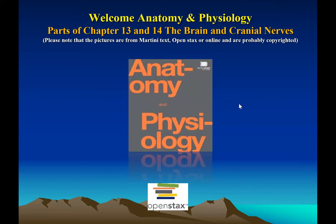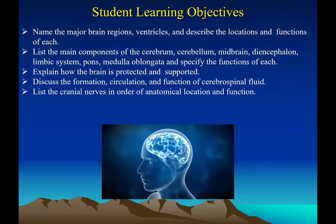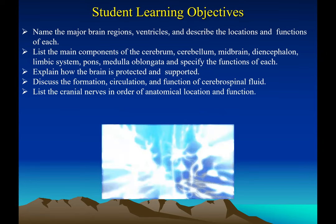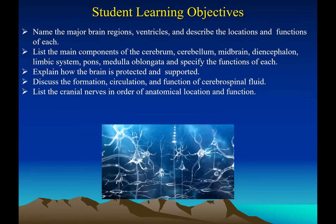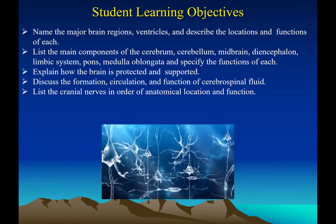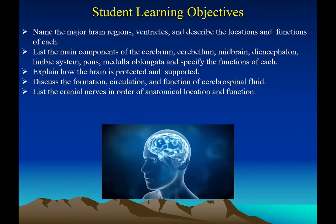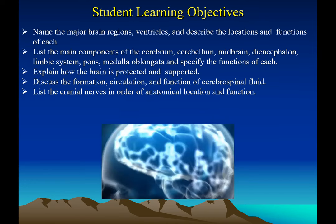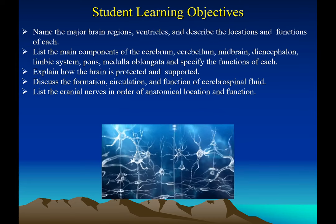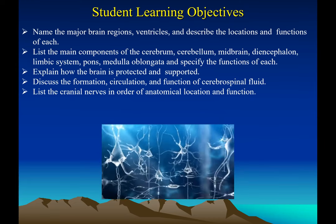This chapter is on the brain and the cranial nerves. The prime learning objectives are to study the anatomy and physiology of the brain. We'll study the different brain locations, the different regions of the brain, and the hollow cavity inside the brain called the ventricle. We'll study the six main divisions of the brain.